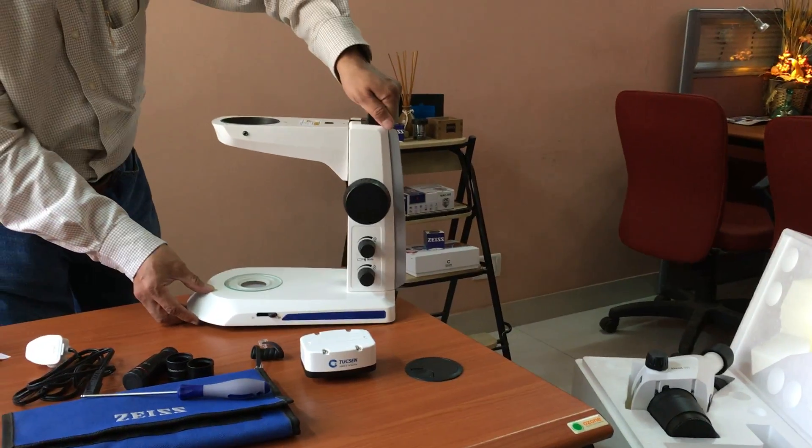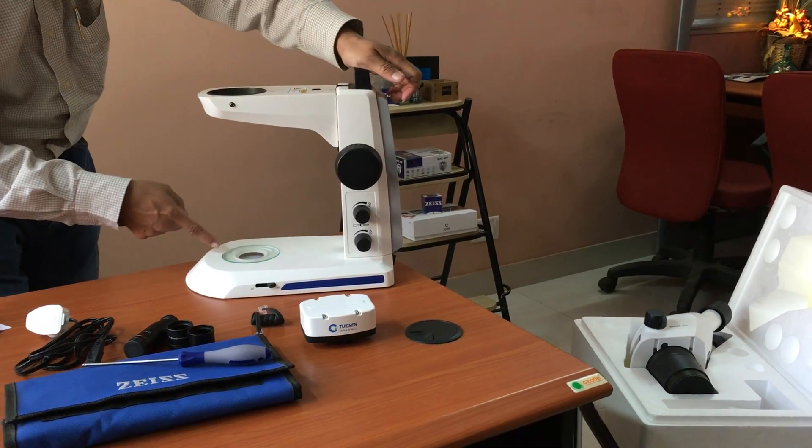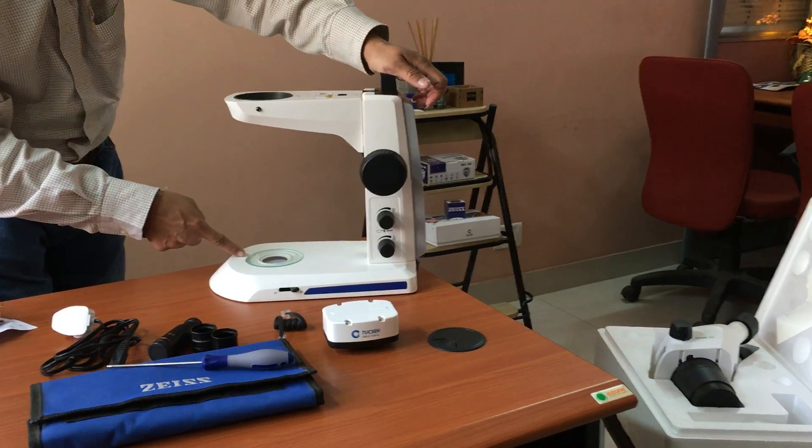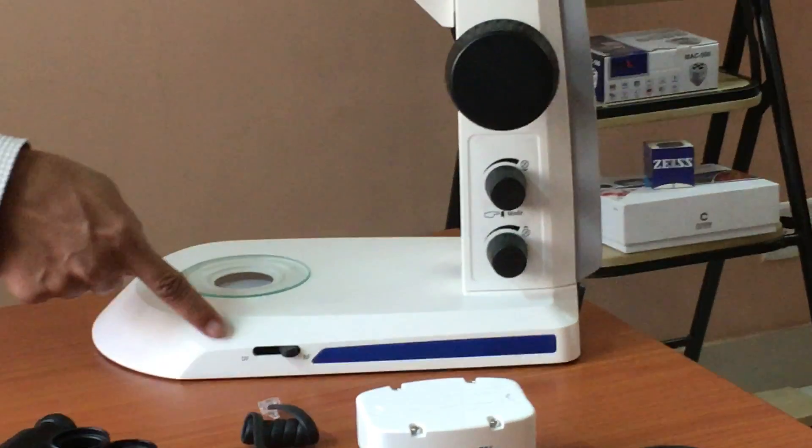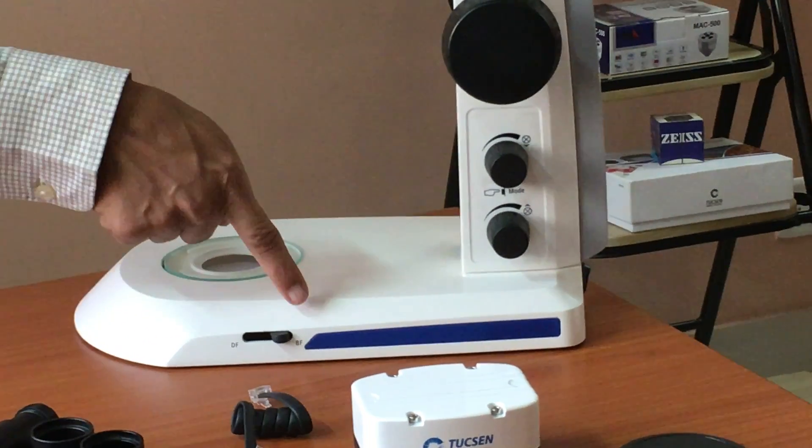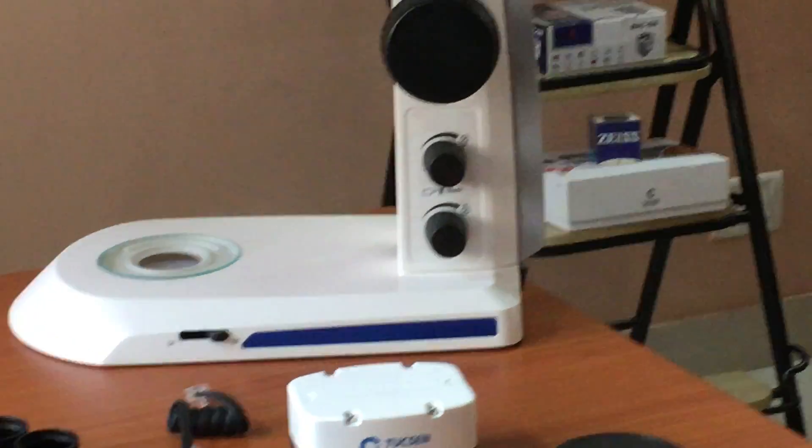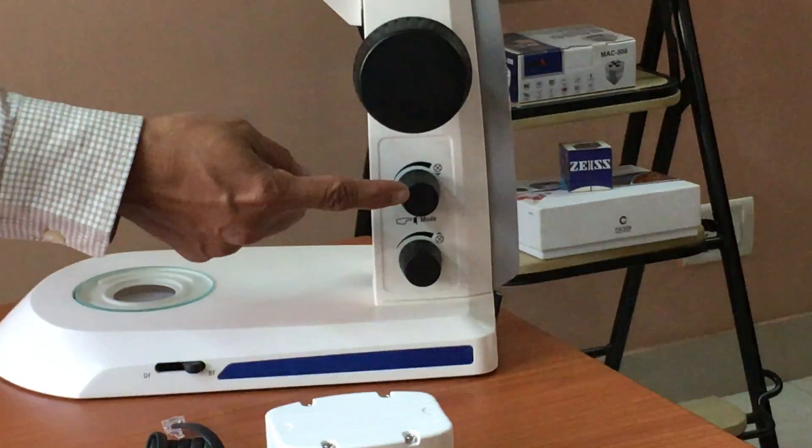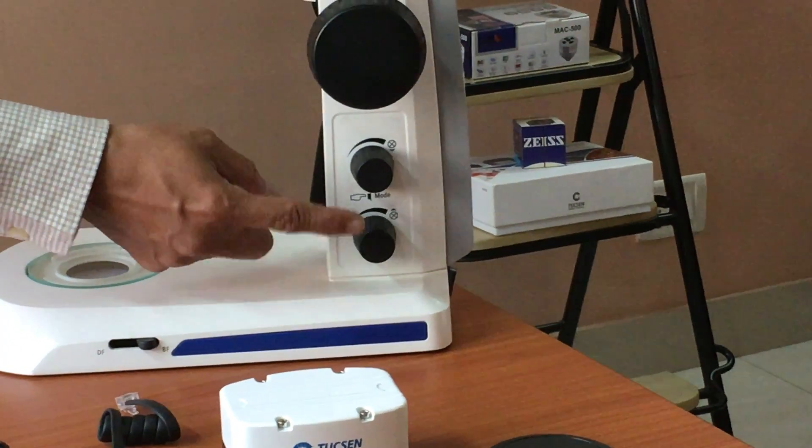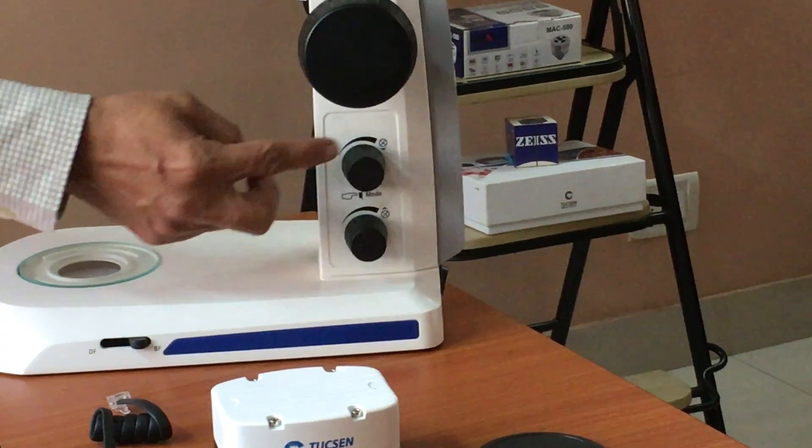The stand edu has got a transmitted light LED illumination that comes from here. In transmitted light we have two modes: one is the dark field and the other is the bright field. For the reflected light, once we put the mains body we will show you the reflected light. For reflected light and for transmitted light there are two independent intensity control knobs available.